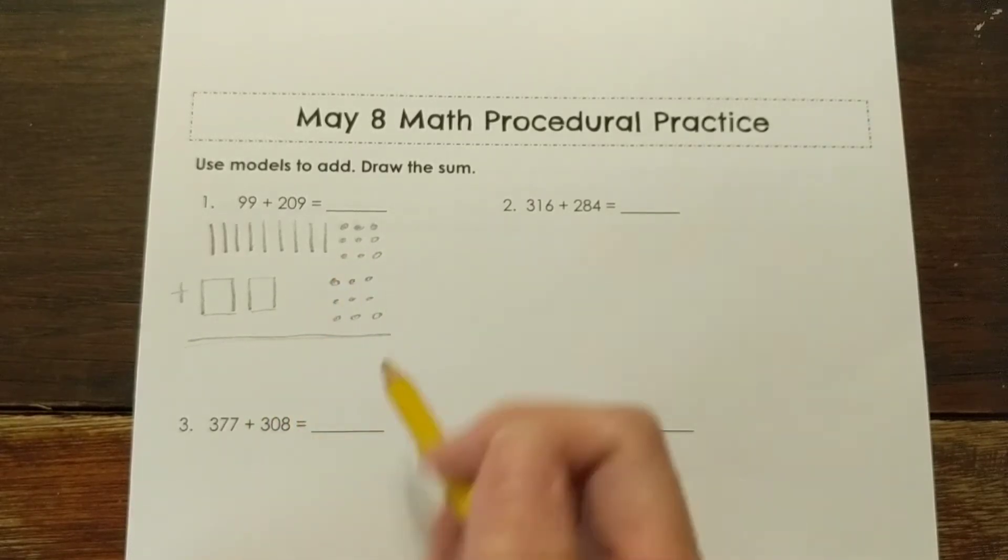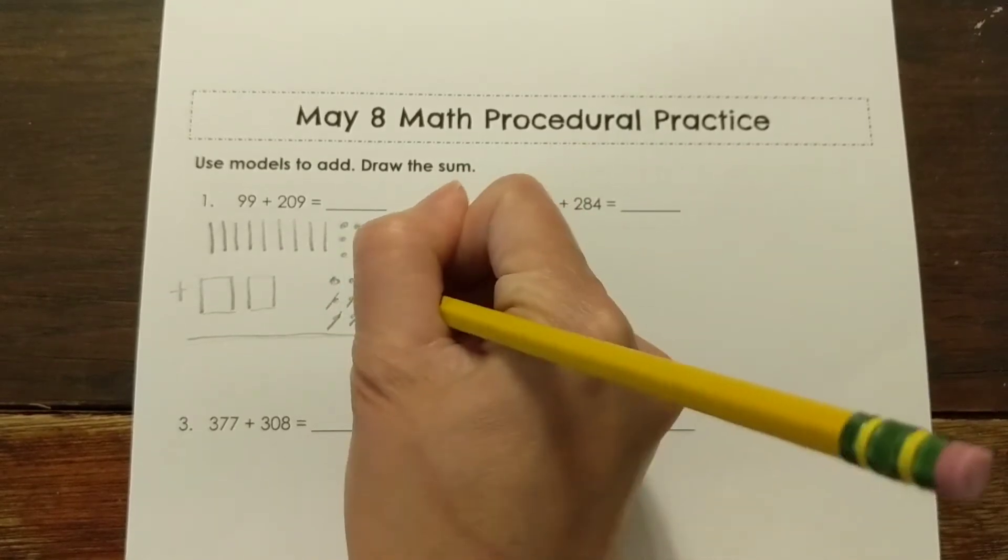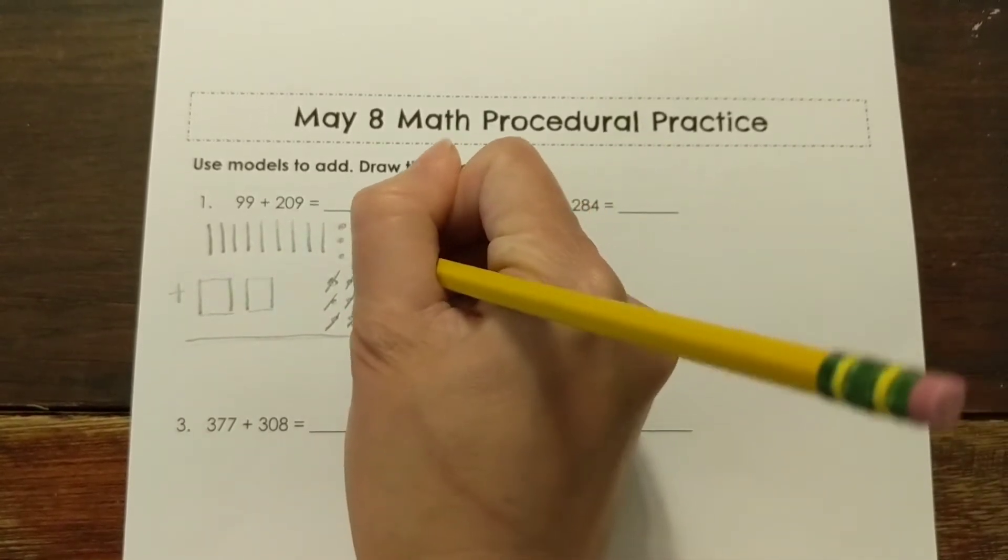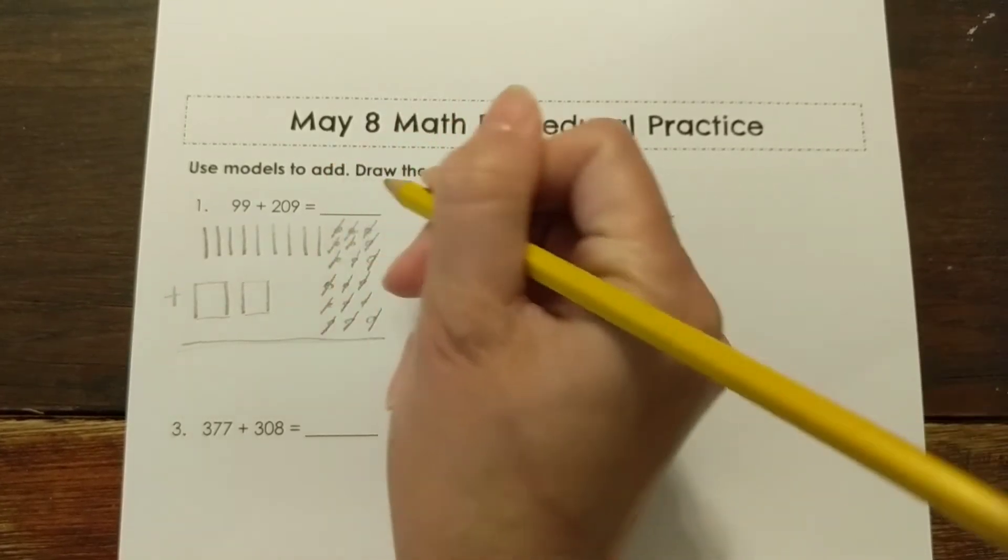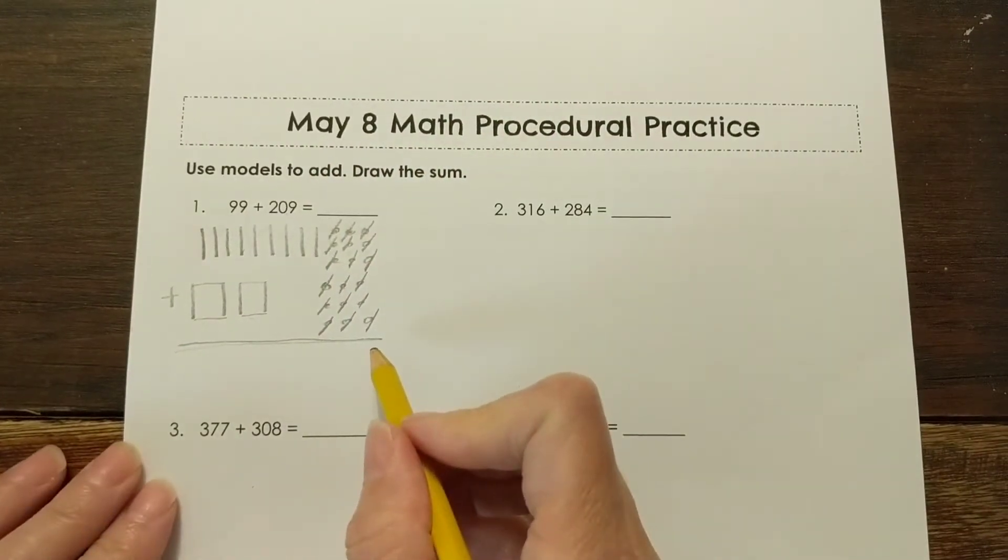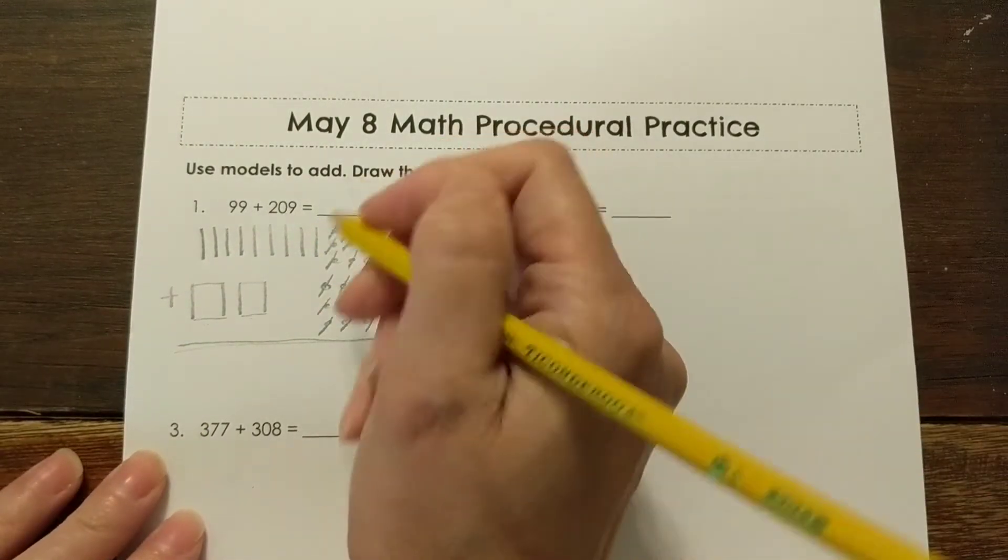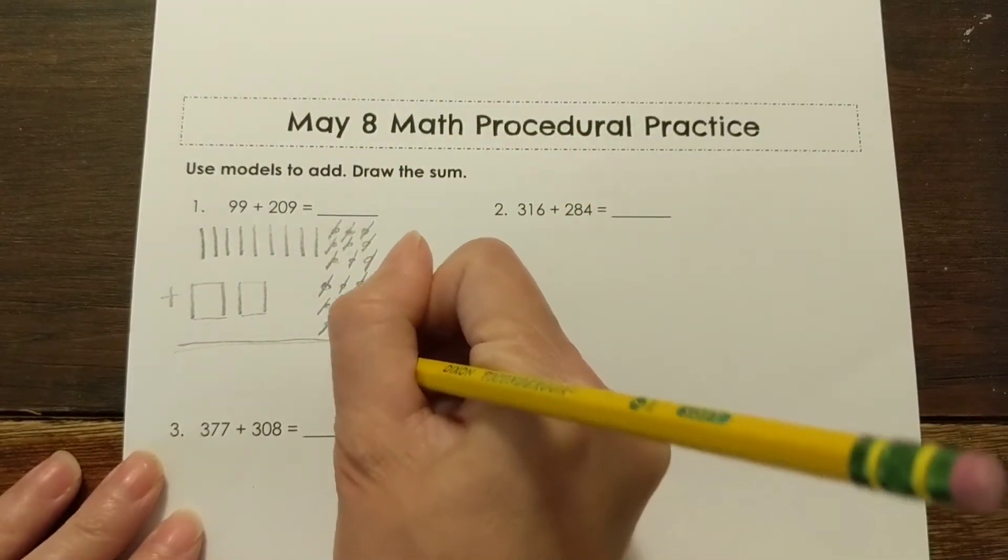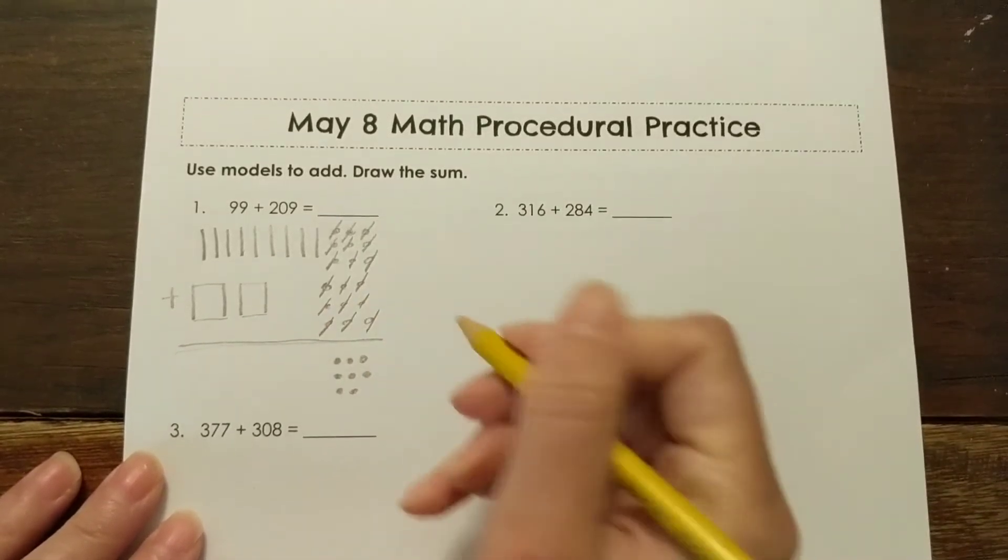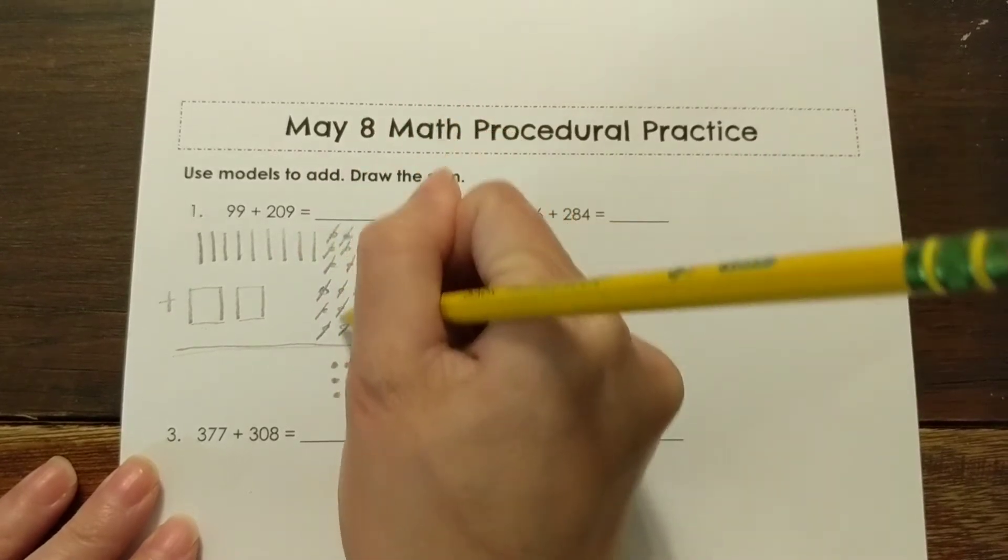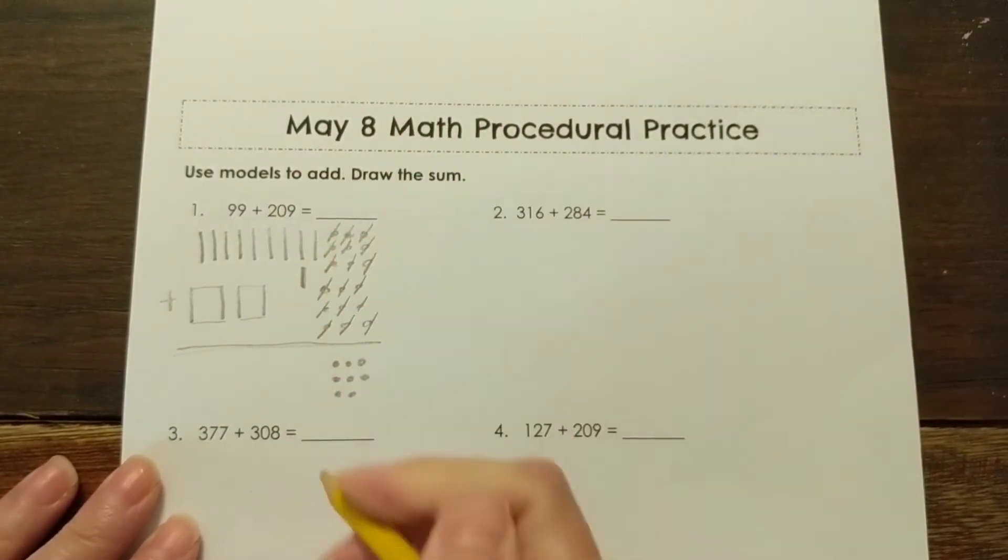Alright, so we're going to go ahead and start adding these up. Ready? 9, 10, 11, 12, 13, 14, 15, 16, 17, 18. Alright, anytime I have more than 10, I can make another 10. So with 18, I can take my 8 and bring it down. So I'm going to put 8 ones. And then I'm going to take that 10 and add it on to my tens up here. I'm going to add another 10.